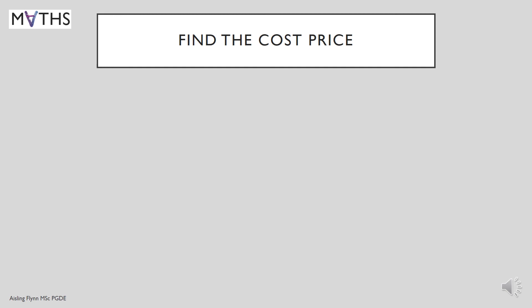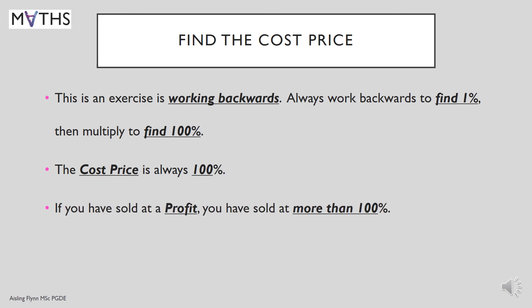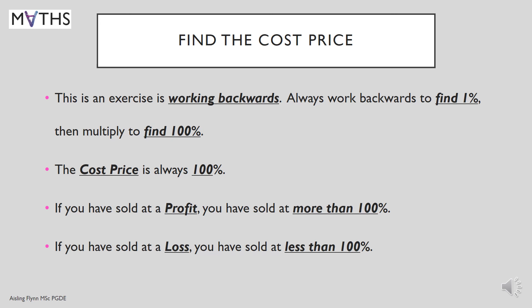Now, finding the cost price is a little bit trickier — this is an exercise in working backwards. Always work backwards to find 1%, and then multiply to find 100%. The cost price is always considered 100%. So if you're asked to calculate the cost price, you're trying to find 100%. If you have sold at a profit, you have sold at more than 100%. And if you have sold at a loss, you have sold at less than 100%. There are two examples following to show this.